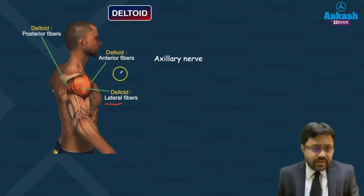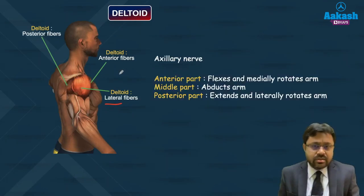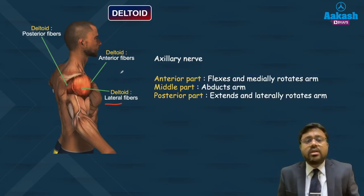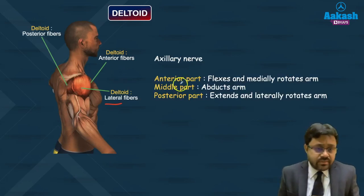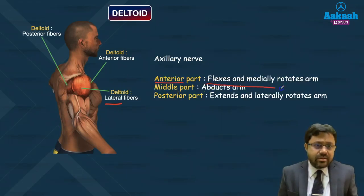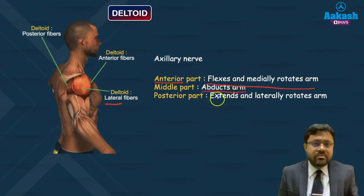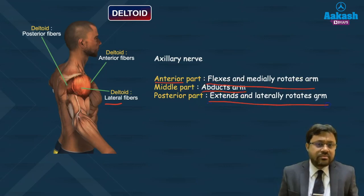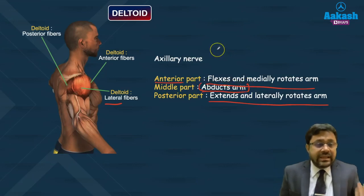The nerve supply of the deltoid muscle is the axillary nerve — very important. The axillary nerve has two divisions: anterior and posterior. The function of the deltoid: the anterior part flexes and medially rotates the arm, the middle part abducts the arm, and the posterior part extends and laterally rotates the arm.